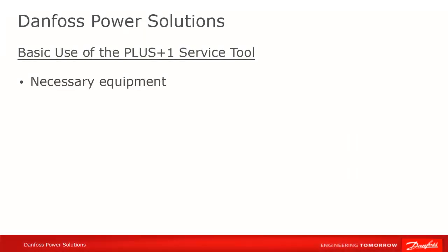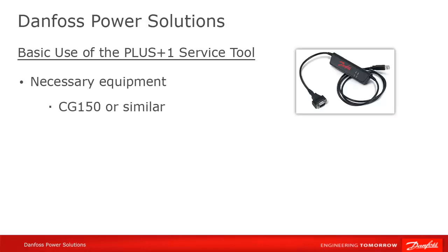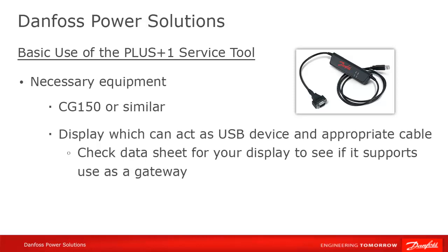In order to use the service tool, you'll first need an appropriate gateway. This can be either a Danfoss CG150 or a Danfoss display, which can act as a USB device with an appropriate cable. You can also use another manufacturer's gateway, as long as it follows the RP1210B API.